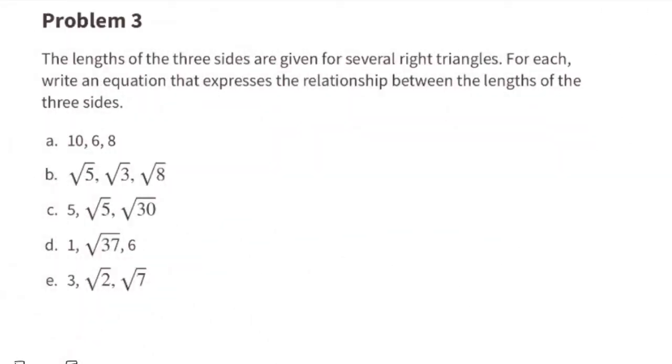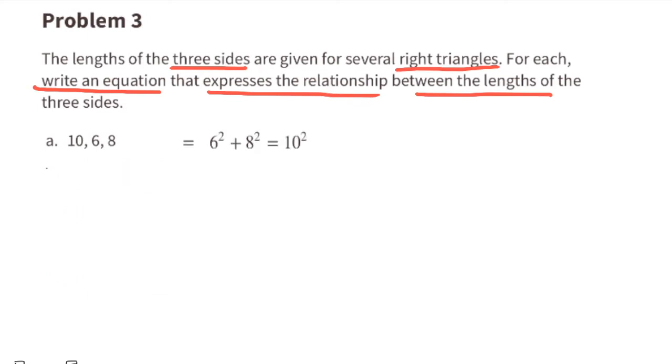Problem number three. The lengths of three sides are given for several right triangles. For each, write an equation that expresses the relationship between the lengths of the three sides. A: Six squared plus eight squared equals ten squared.